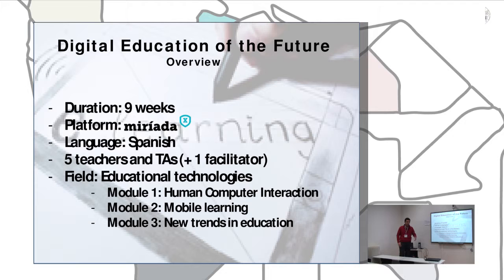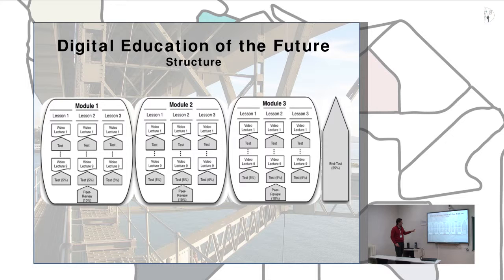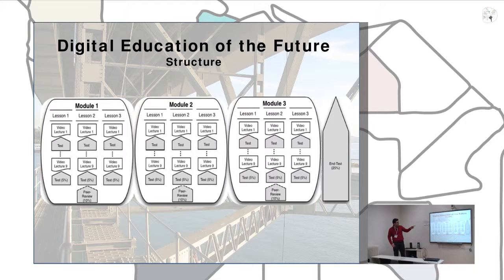There were three modules of three weeks each: Humanity Interaction, Mobile Learning, and New Trends in Education. It was a homogeneous structure across all three modules — each module had three weeks, three lessons, and in each lesson approximately nine video lectures of ten minutes each. We had formative assessment activities — a multiple choice test after each video — and summative assessment activities: end-of-lesson tests with a weight of 5%, module peer review activities at 10%, and a final exam at 25% of the grade.